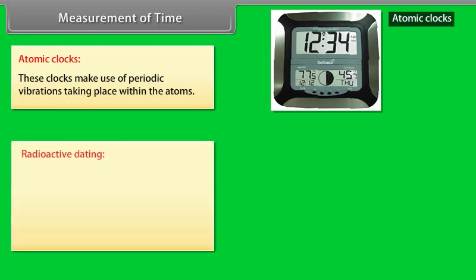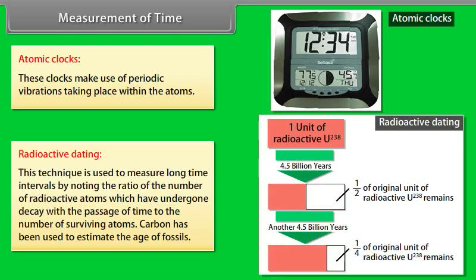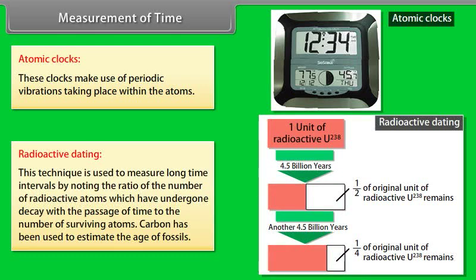Radioactive dating: This technique is used to measure long time intervals by noting the ratio of the number of radioactive atoms which have undergone decay with the passage of time to the number of surviving atoms. Carbon has been used to estimate the age of fossils.